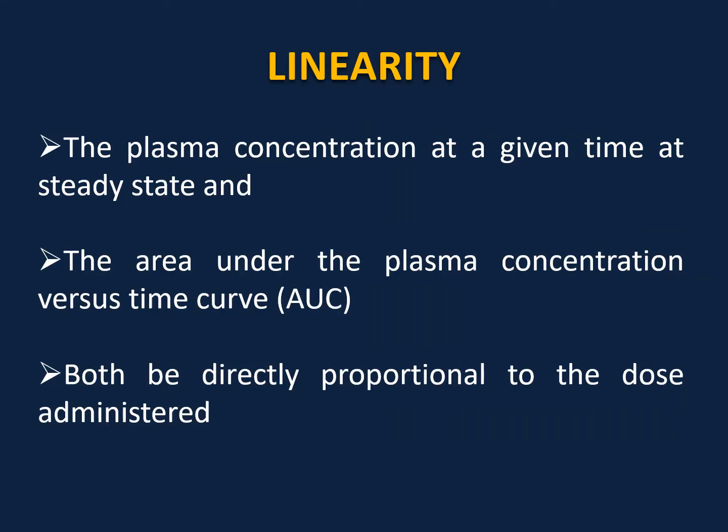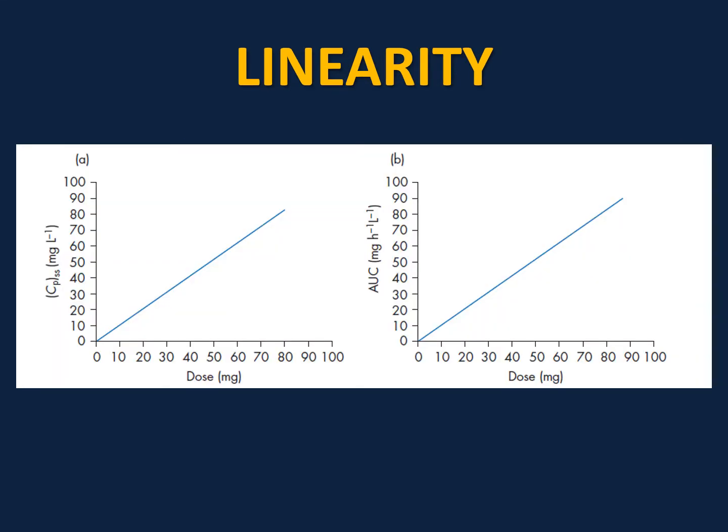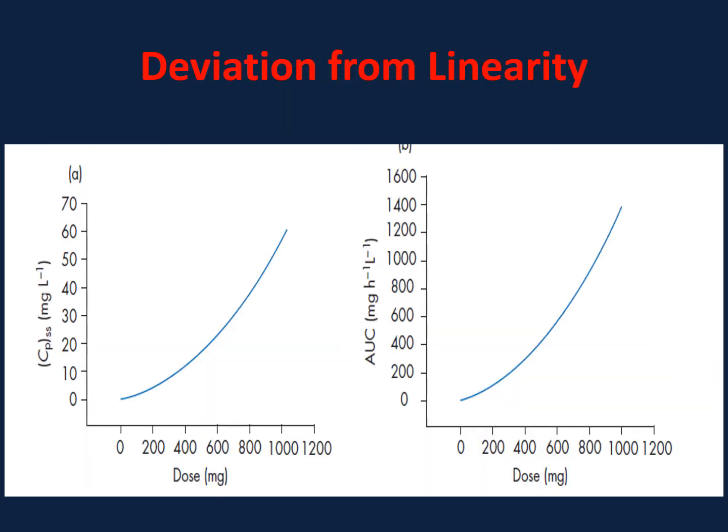In linear pharmacokinetics, there exists a linear relationship between plasma concentration and dose, or between AUC (area under the curve) and dose. As shown in this picture, as the dose increases, both concentration and AUC increase at a proportionate rate. This proportional relationship is the defining characteristic of linear pharmacokinetics.